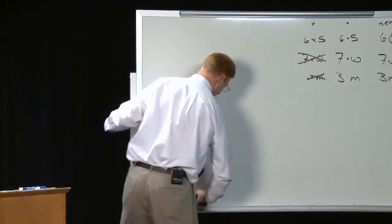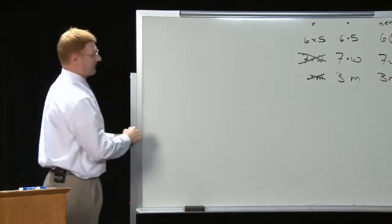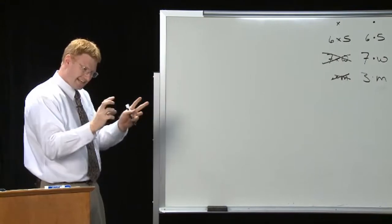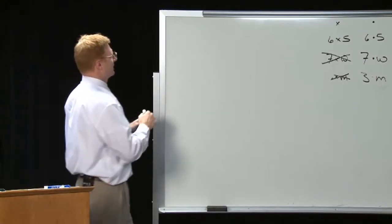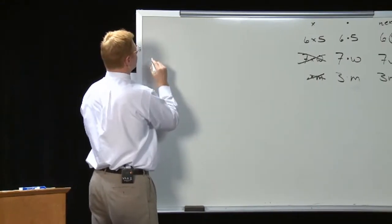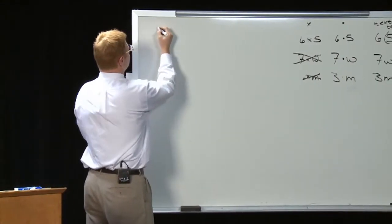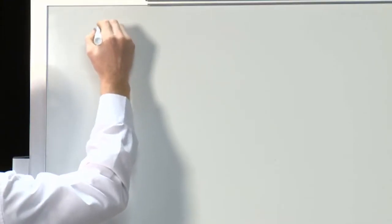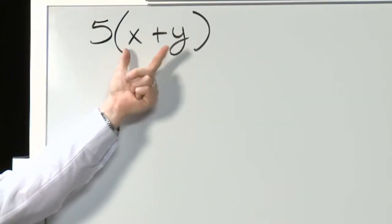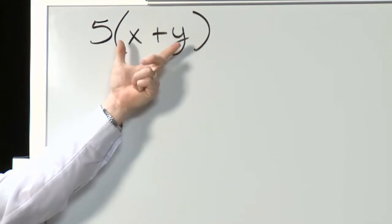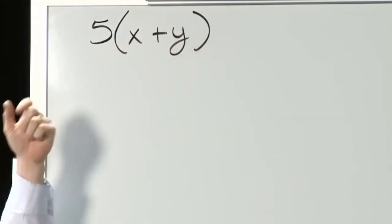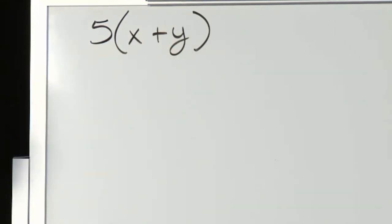The distributive property is going to help you simplify a lot of things with these letters and variables you're dealing with, to get it down as simple as you can get it. For example, if I have two numbers here, x plus y — I don't know what the numbers are so they're variables — and I have it five times.